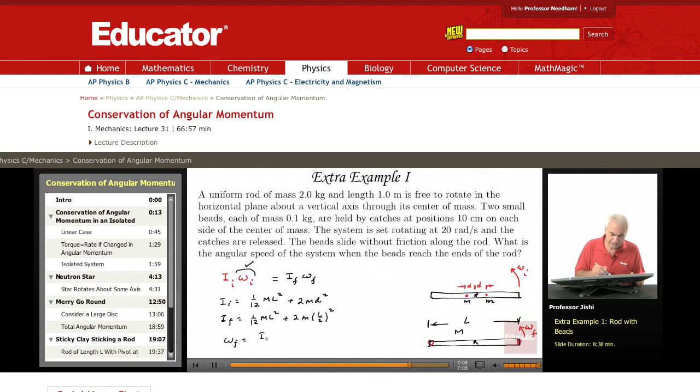So omega_f is I_initial*omega_initial over I_final. So you just—if you want to get numbers, you may get questions like that, in fact without numbers, just with symbols—then now you just multiply.